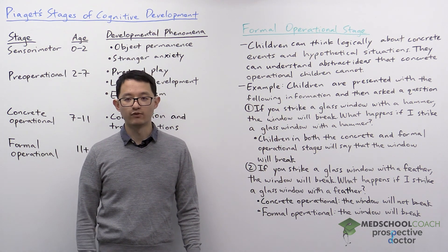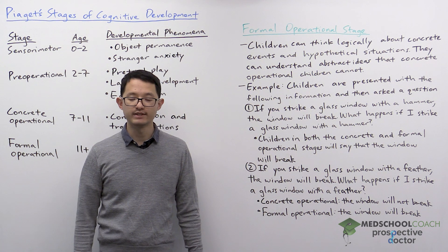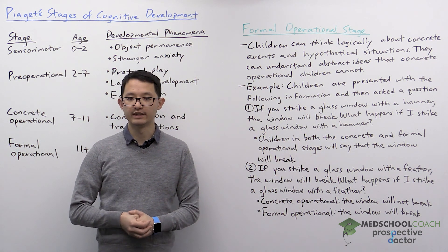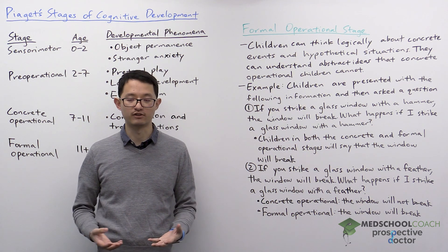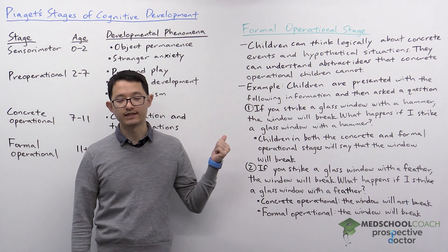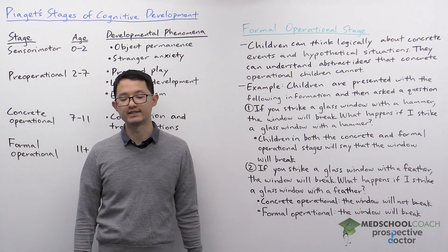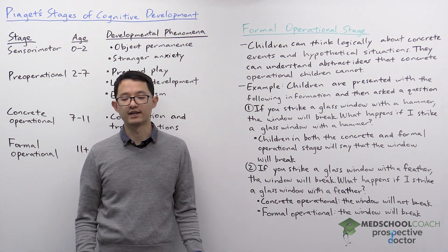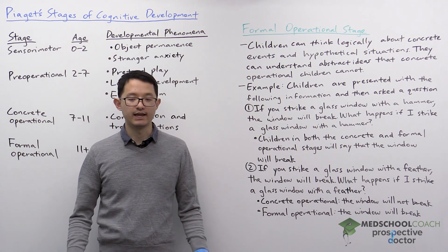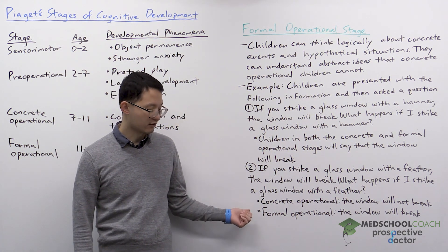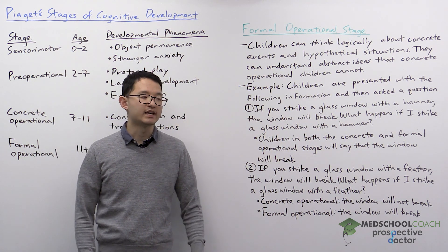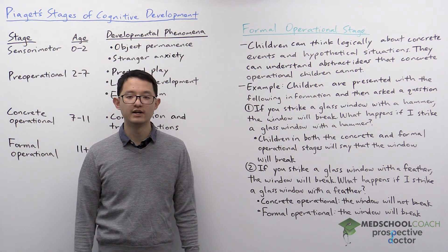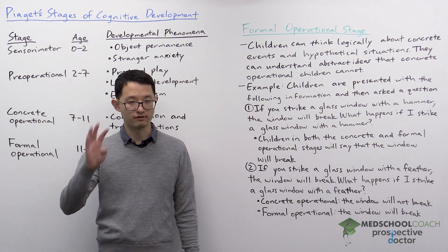Those are Piaget's four stages of cognitive development. One thing to keep in mind is that this is only a theory — not all theories are going to be correct. There are some aspects of Piaget's theory that are correct and some that aren't. For the MCAT, you just need to know the theory as presented. There are many psychologists who followed Piaget and came up with additional stages after the formal operational stage, but according to Piaget, there are only four stages.